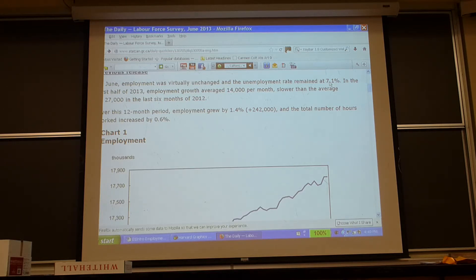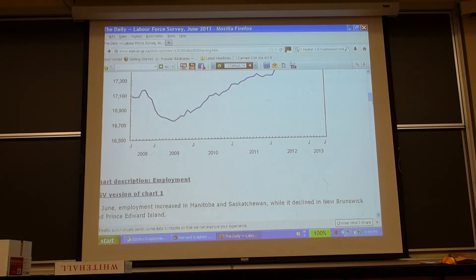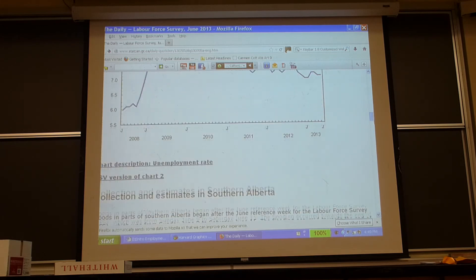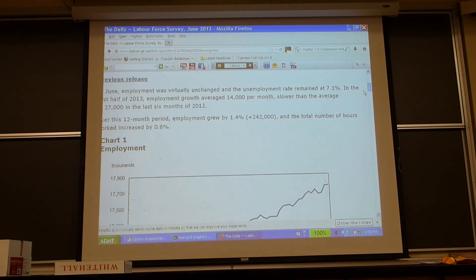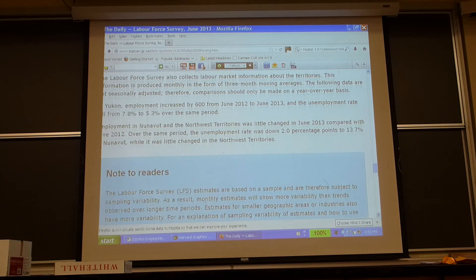In the first half of 2013, employment growth averaged 14,000 per month. Jobs went up every month by 14,000. In the last six months of 2012, jobs went up by 27,000. Just keep it in mind. The economy is slowing down, at least so far as creating jobs is concerned.